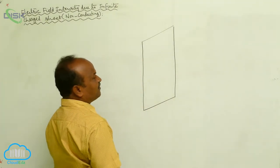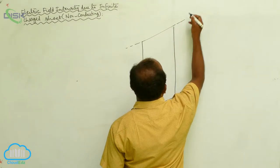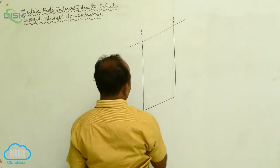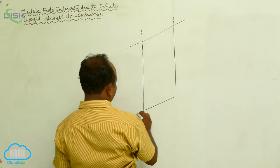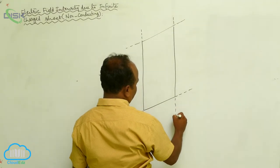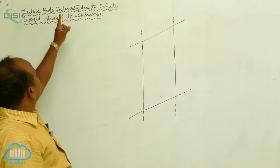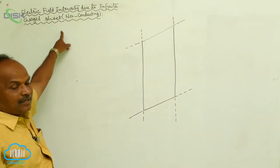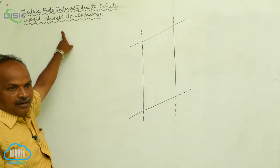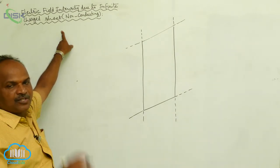The charged sheet has infinite area. The charged sheet is a two-dimensional object, and the charge is distributed on this two-dimensional object.